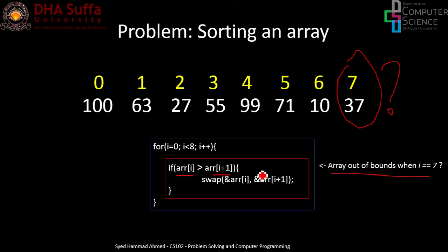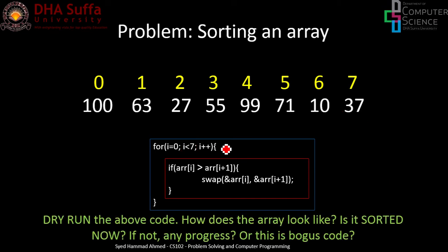Since we are always comparing two numbers, we need to fix the loop condition. We should execute the loop one time less, so we change the condition to i less than 7. That's the fix.